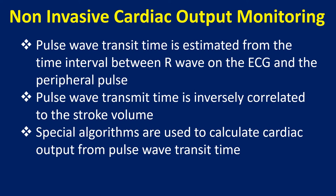Pulse wave transit time is estimated from the time interval between the R wave on the ECG and the peripheral pulse. Pulse wave transit time is inversely correlated to the stroke volume, and special algorithms are used to calculate cardiac output from it.